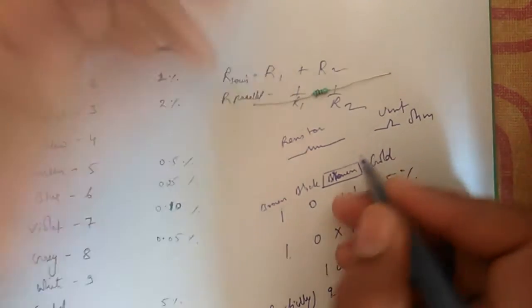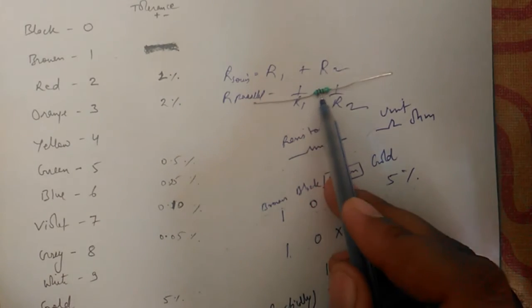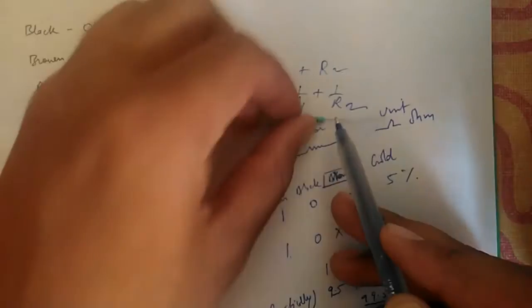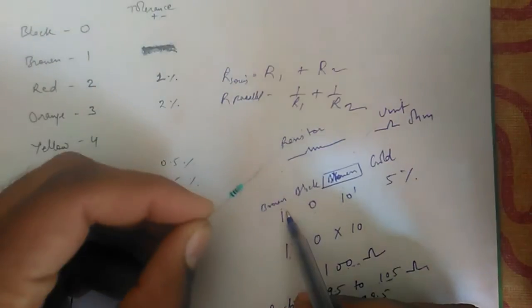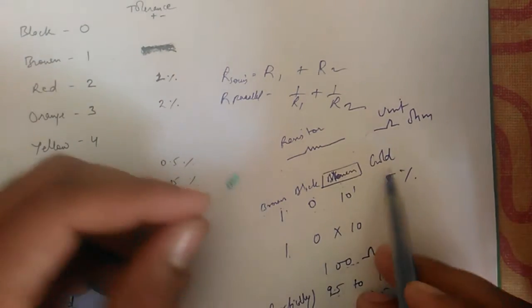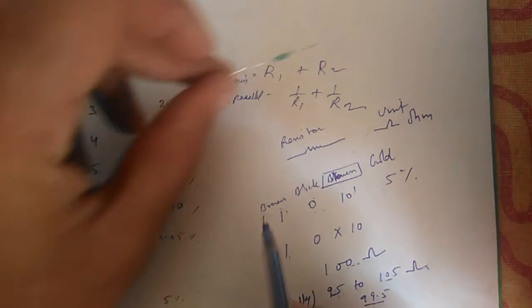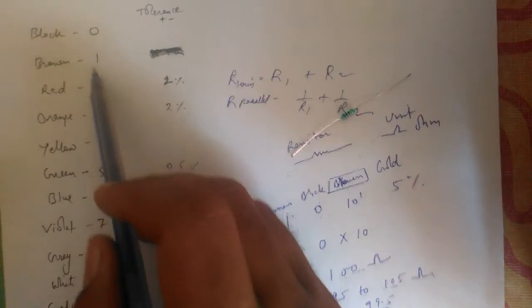It has three or four colors on each. First one is brown, second one is black, third one is brown, and the fourth one is gold. So we can calculate this resistor value theoretically.